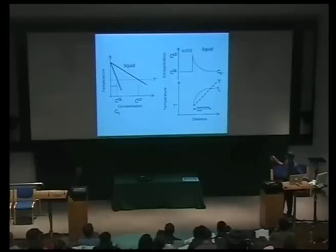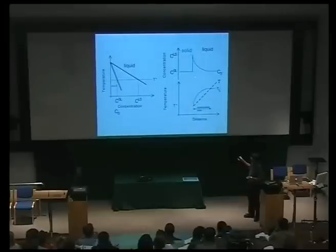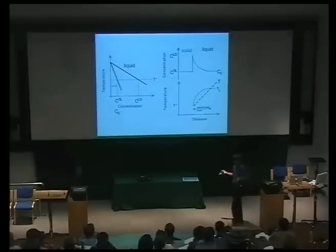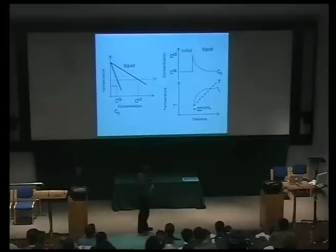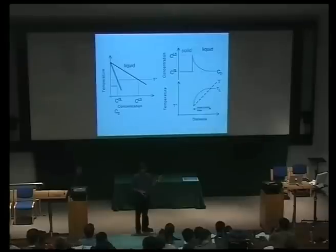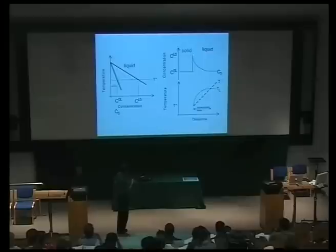If we make the temperature gradient in the liquid even steeper, the supercooled zone will become narrow. There will come a point where the actual temperature gradient is greater than the gradient of the liquidus temperature curve, in which case there will be no supercooled zone and you will get a stable interface. So I'd like to calculate this gradient of the liquidus temperature line to define the condition at which constitutional supercooling disappears.